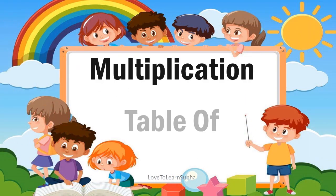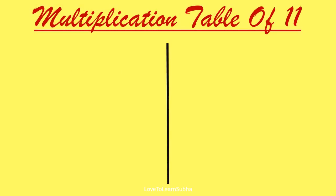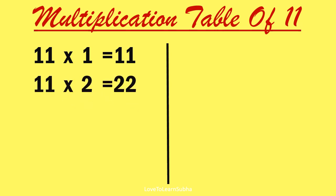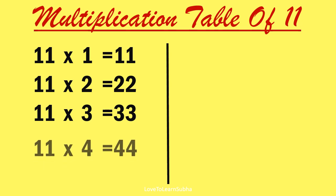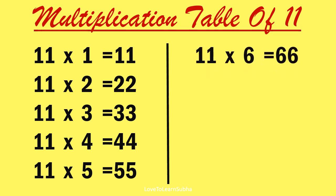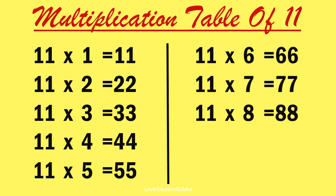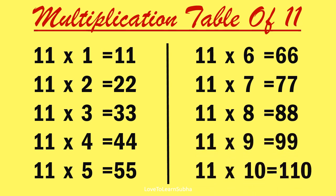Multiplication table of 11. 11 1s are 11, 11 2s are 22, 11 3s are 33, 11 4s are 44, 11 5s are 55, 11 6s are 66, 11 7s are 77, 11 8s are 88, 11 9s are 99, 11 10s are 110.